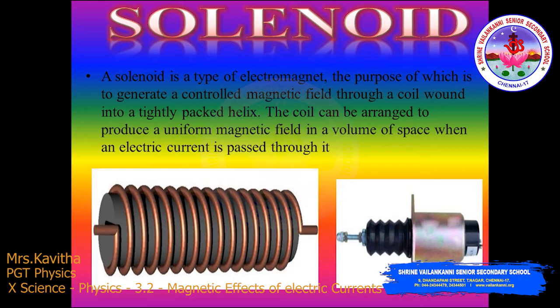The coil can be arranged to produce a uniform magnetic field in a volume of space when an electric current is passed through it. Take a long wire and coil it like a spring. The turns of the spring should be closely spaced and insulated from each other. It can be wrapped as insulated copper wire over an insulated hollow cylindrical body, as we are seeing in that diagram.